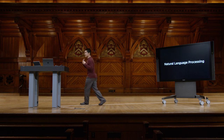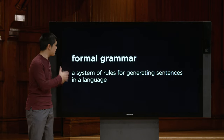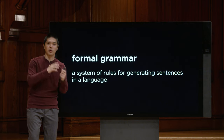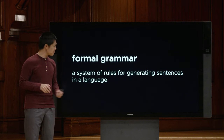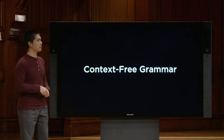How could we teach a computer to understand the structure of natural language? One approach is to start by thinking about the rules of natural language. In English, nouns tend to come before verbs, nouns can be modified by adjectives, and so on. If we could formalize those rules, we could give them to a computer. We're going to define a formal grammar — a system of rules for generating sentences in a language. This is a rule-based approach. Today we focus on one kind called a context-free grammar.